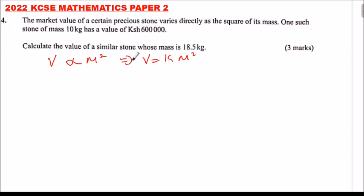Now because we have been given such a stone that was 10 kg had a value of 600,000, that will help us to find the value of K. So we say 600,000 equals K multiplied by 10 squared. K equals 600,000 divided by 100, you get K equals 6,000.